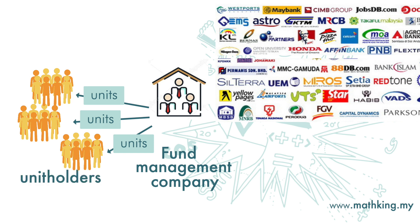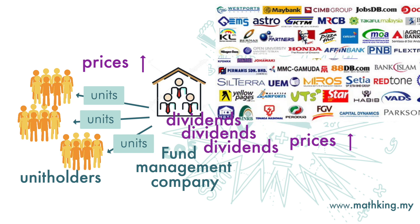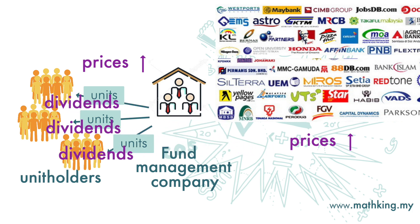The investors are called unit holders. So when the prices of shares of those companies selected by fund management companies increase, the price of the units will also increase. When the companies distribute dividends, the fund management companies may distribute the dividends to the unit holders.